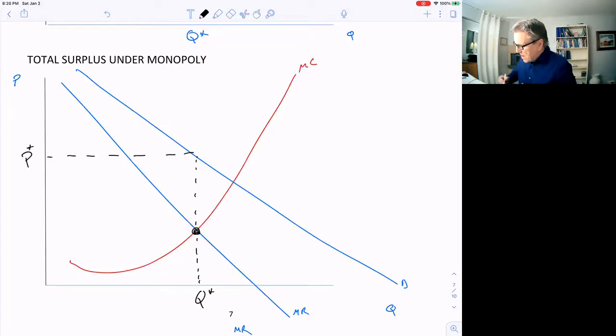But there's a problem here, and that is the quantity is not only the price higher under monopoly, but the quantity is less. And if we look at this little triangle right here, I'll draw it in black.